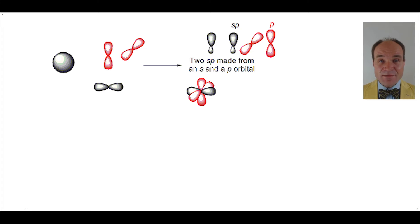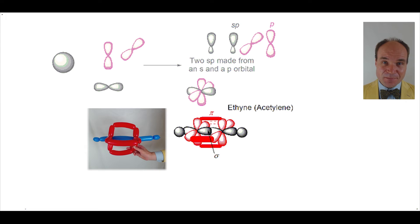When we have two of these sp hybridized carbons brought together to make bonds, we can observe what happens in the chemical ethine. Ethine is also known as acetylene, which is used in acetylene torches. You'll see that the two sp hybridized orbitals, one on each of the carbons, come together to create a sigma bond.